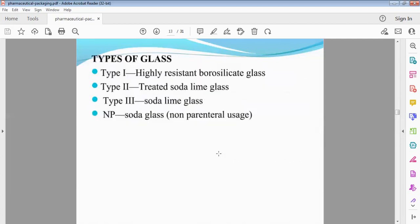Types of glass. Type 1, Type 2, Type 3 for non-parenteral usage, and NP. Type 1 - highly resistant borosilicate glass. Type 2 - treated soda lime glass. Type 3 - soda lime glass. NP - non-parenteral usage, soda glass.